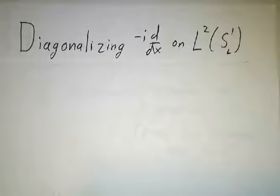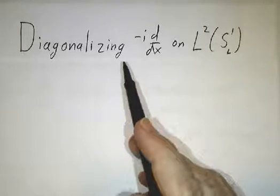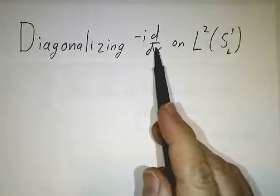Now that we've found the eigenvalues and eigenvectors of the second derivative operator for periodic functions, we're going to do the first derivative, or more precisely, minus i times the first derivative.